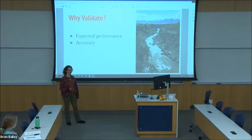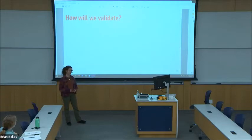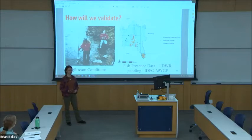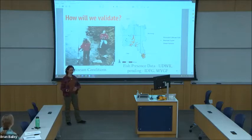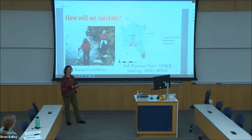Environmental conditions are probably the thing that is most often validated, like stream conditions you can go out and measure. But taking model predictions of where species occur and then going out and actually field sampling to see if they're there is pretty uncommon. We're going to validate both environmental conditions and habitat suitability by measuring stream conditions along the main stem of the Bear River this summer and taking fish presence data collected from the Utah Division of Wildlife Resources, Idaho Fish and Game, and Wyoming Fish and Game to compare the predicted outputs of the models to where we've actually seen the fish in the field. The bluehead sucker points are few and far between.